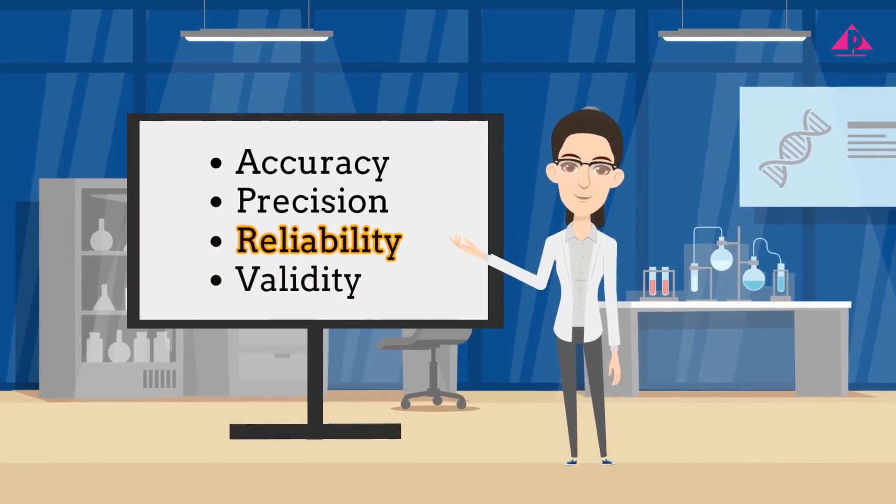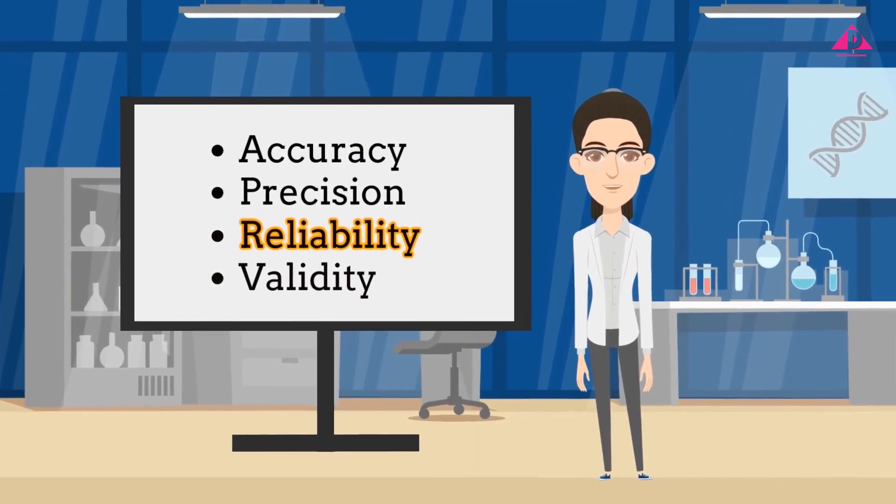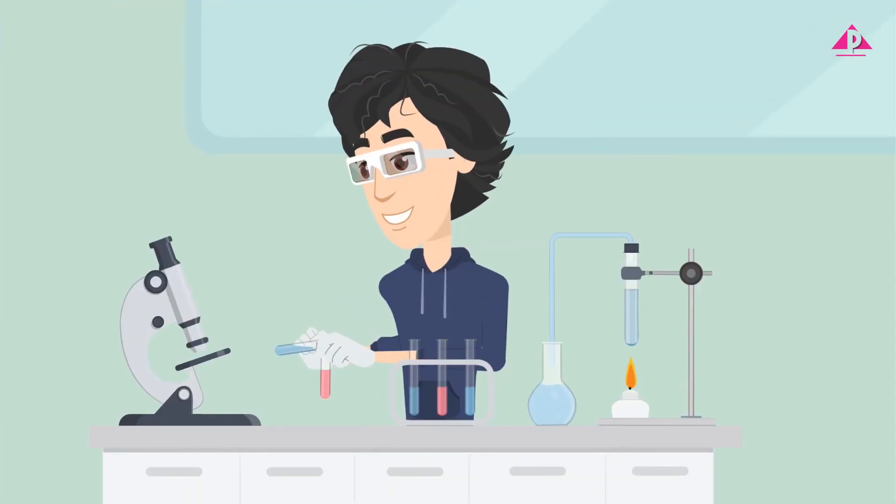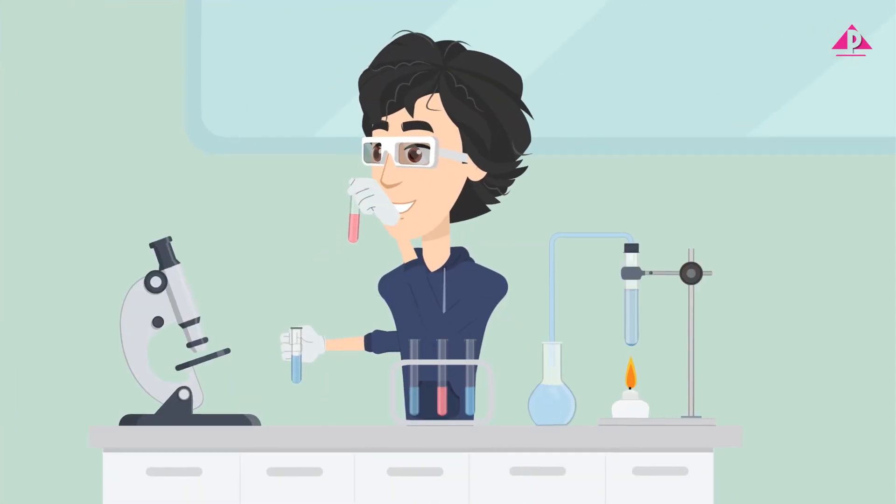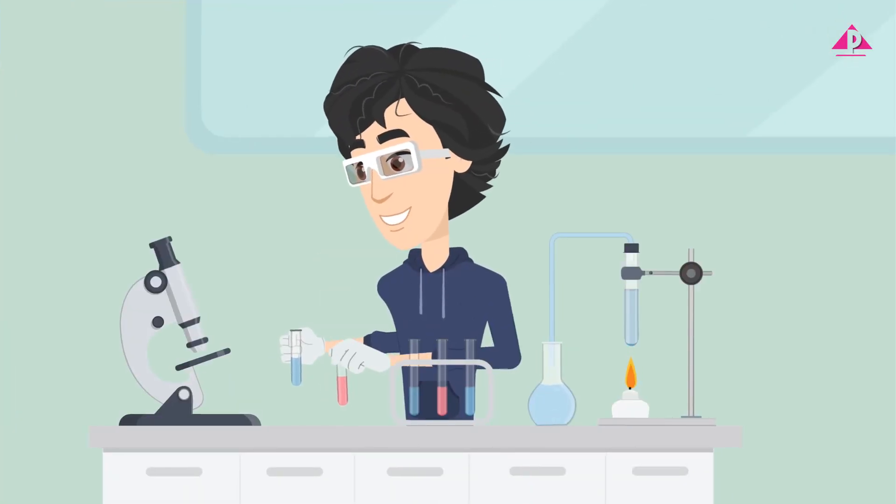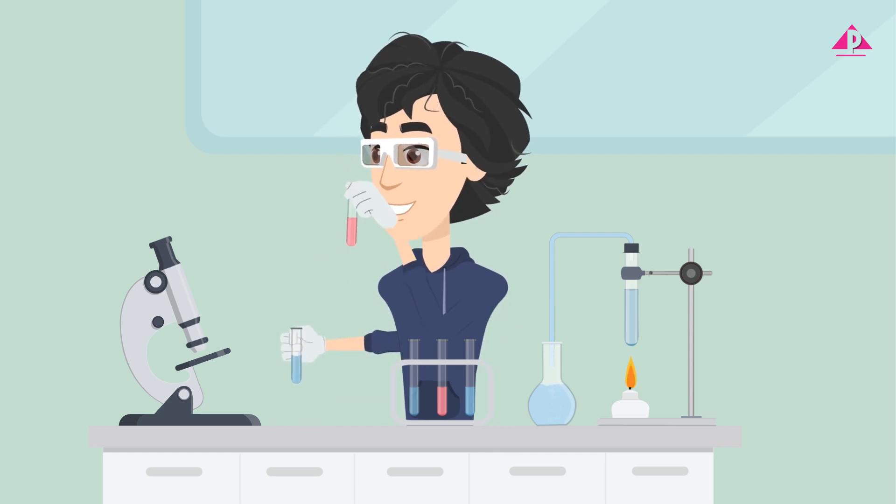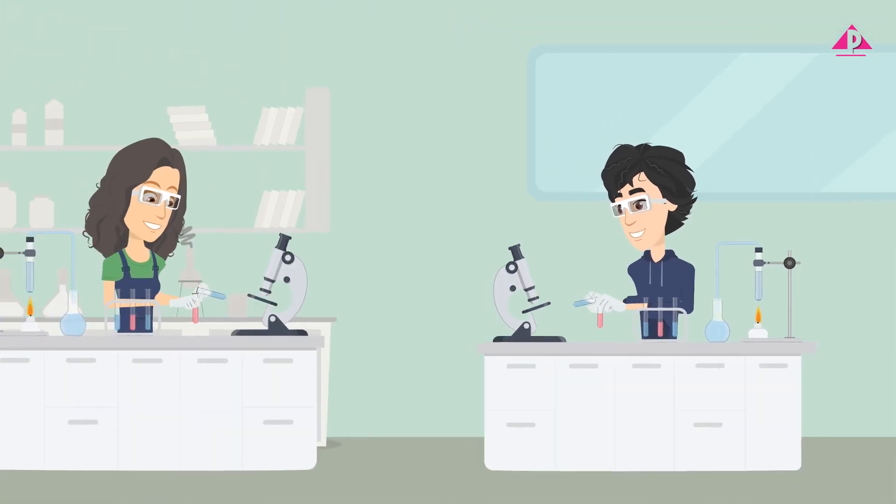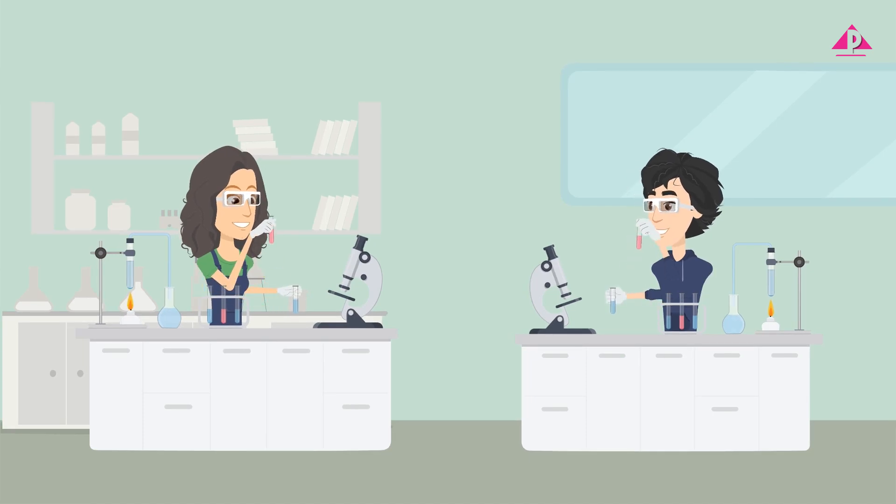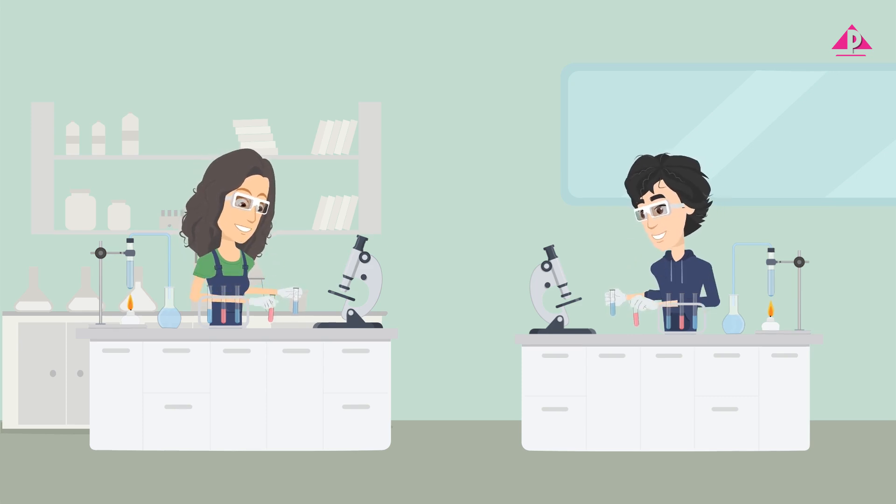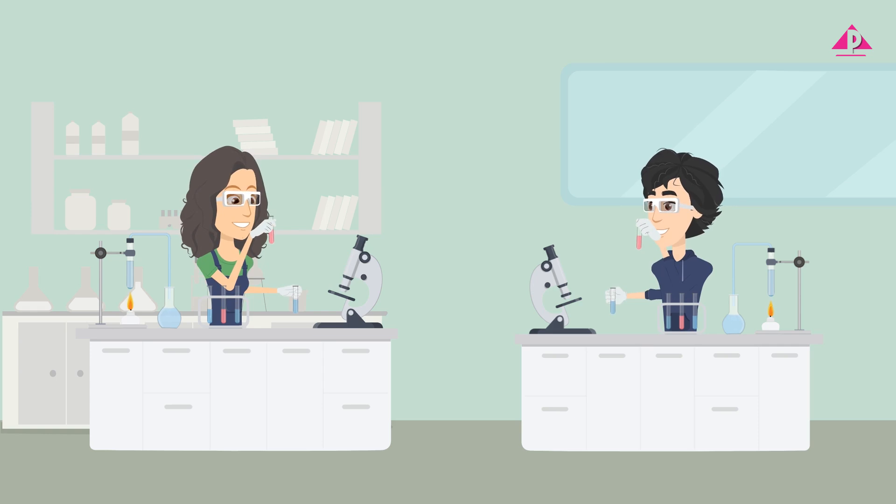Now let's talk about reliability. It's about consistency. If you do an experiment and get the same result every time, and your friend does it too and gets the same thing, those results are reliable. Precision helps here because close measurements show you can count on them.